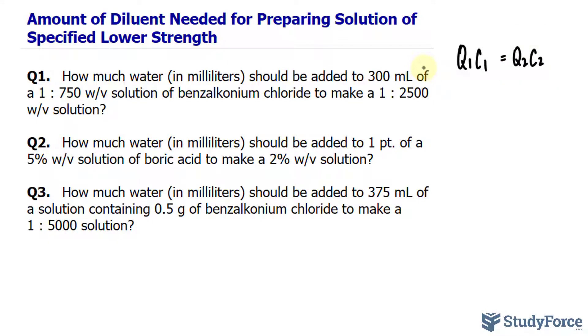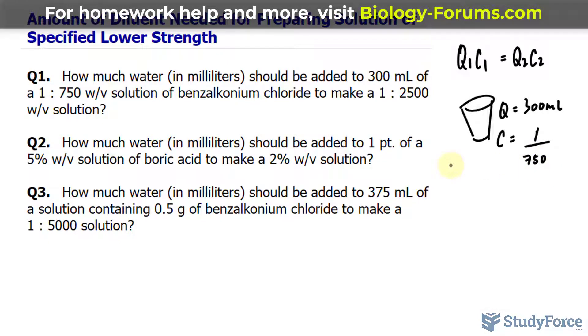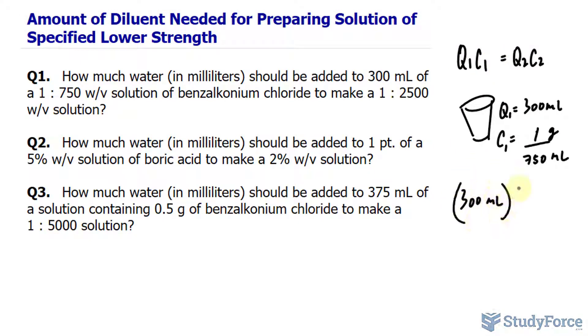So in the case for question number one, they're telling us that we have a stock solution. The quantity of the stock solution here is 300 milliliters and its concentration is 1 to 750 weight per volume. So I'll write down concentration equals, and rather than writing it down as a ratio, I'll write it down as a fraction, 1 over 750 weight per volume. They haven't told us the units of the weight, but we'll assume that it's grams. So it's grams at the top and at the bottom we have 750 milliliters.